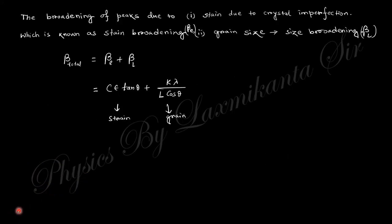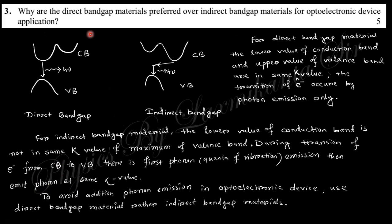Next question: Why are direct bandgap materials preferred over indirect bandgap materials for optoelectronic device applications? Direct bandgap material means the lower value of conduction band and higher value of valence band are at the same k value. If not at the same k value, it's called indirect bandgap.